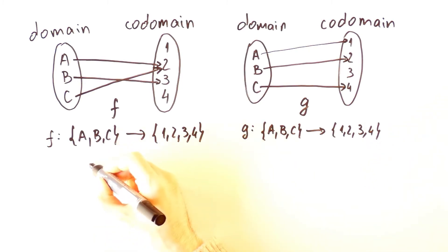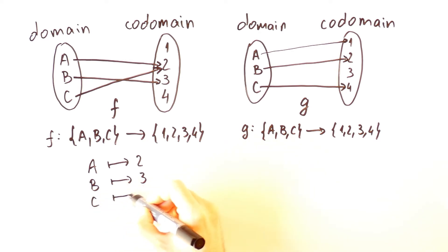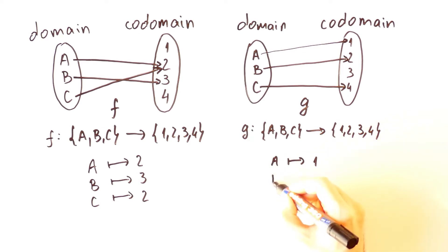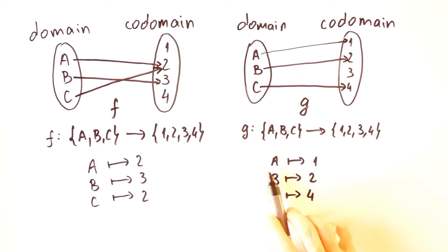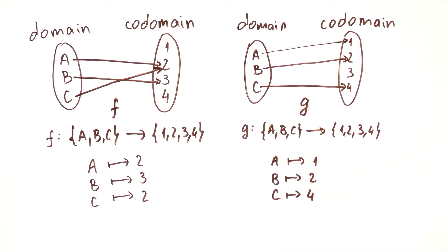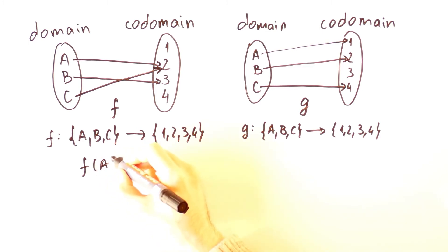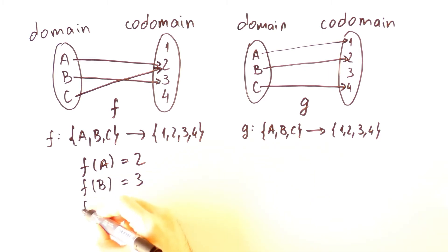f maps A to 2, B to 3 and C to 2, while g maps A to 1, B to 2 and C to 4. Note that when we write for elements, we use an arrow that has a bar at the tail. This is called the arrow notation. However, we'll usually use what is called the functional notation. So instead of saying that f maps A to 2, we'll say that f of A is equal to 2. Likewise, f of B is equal to 3 and f of C is equal to 2.